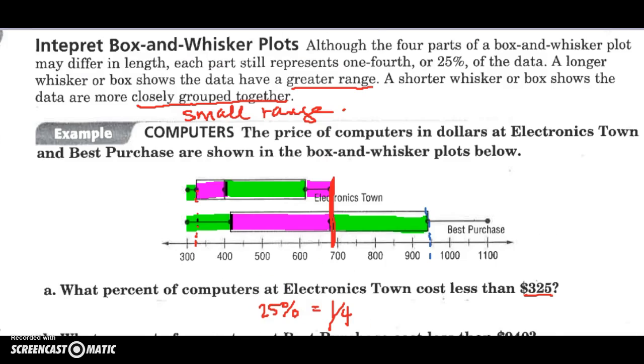And also notice that our box, look how spread out. All of this means that we have a bigger range. Even among our median, we have a bigger range. Here we have a smaller range.